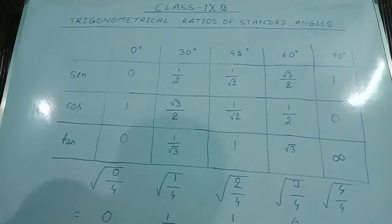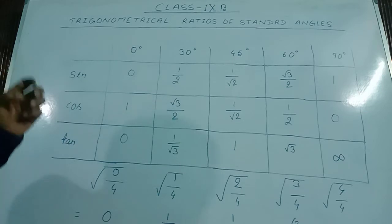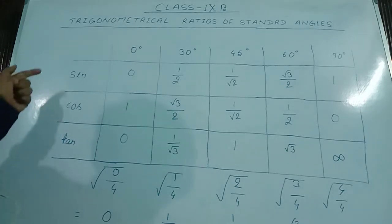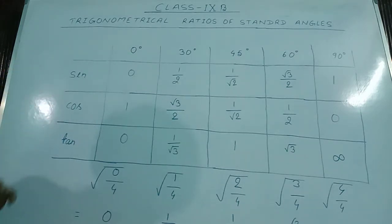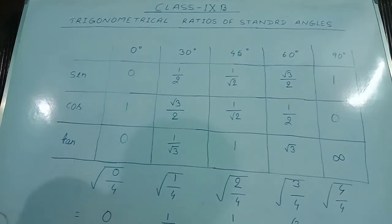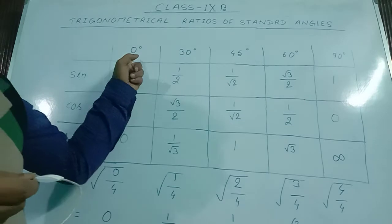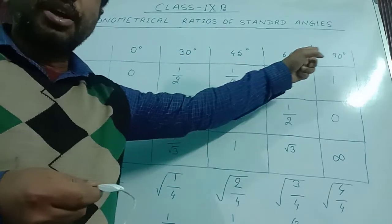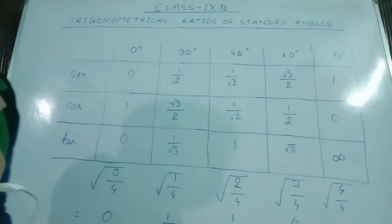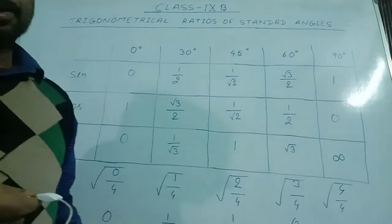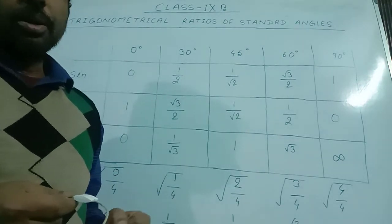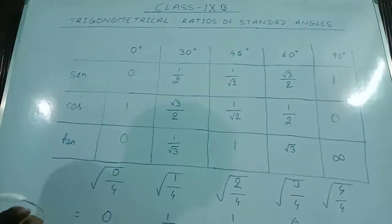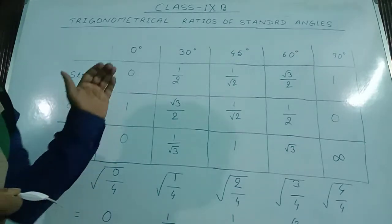In the first topic, we see the values of standard angles regarding these three identities: sin, cos, and tan. These standard angles are five in number: 0°, 30°, 45°, 60°, and 90°. Except these five types of angles, all other angles are called non-standard angles. This chapter is related to the standard angles.